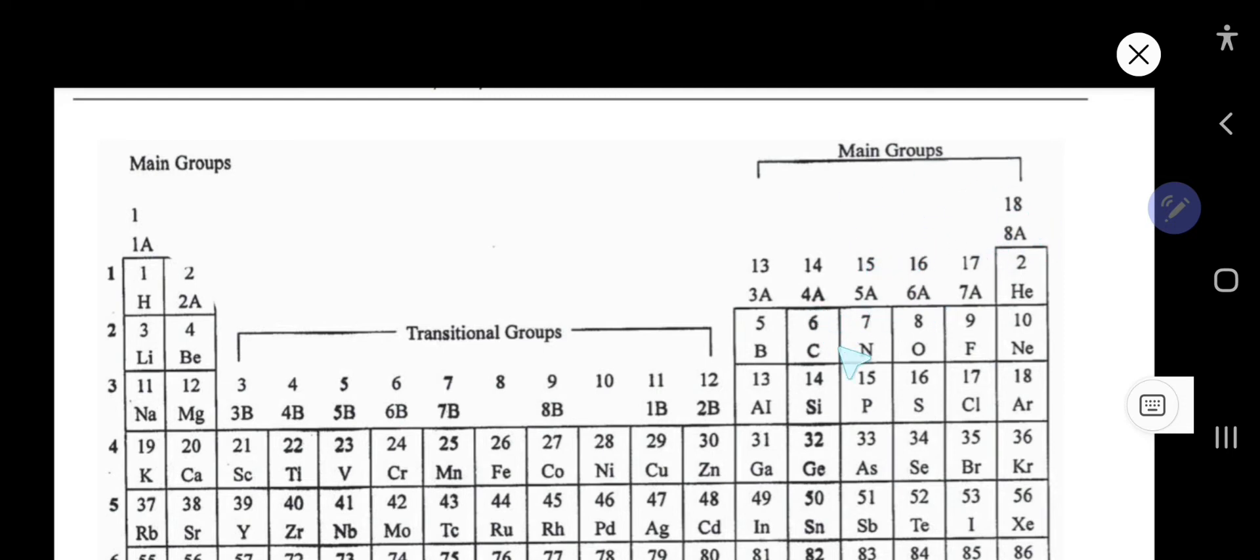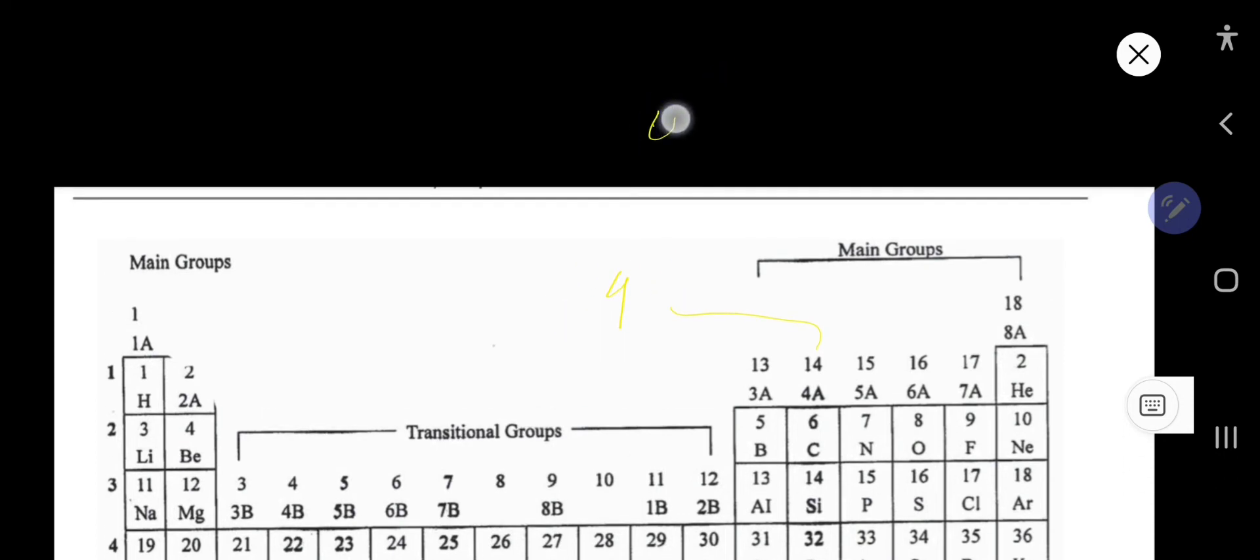Carbon is in group 14 or 4A. 4A means it has four valence electrons. For group 14, you consider the unit digit, which is 4. So carbon has four valence electrons—group number equals valence electrons.